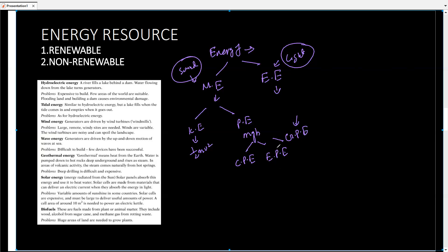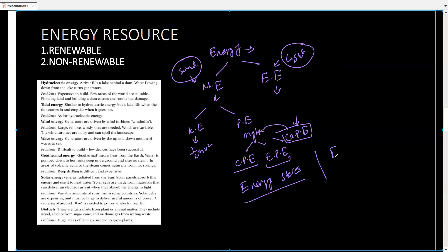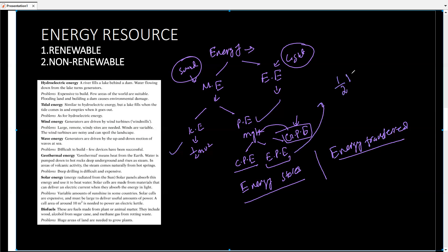Gravitational potential energy — with respect to the earth's surface — has the formula mgh. Chemical potential energy is energy stored due to the position of atoms. Elastic potential energy is energy stored due to a compressed or stretched spring. After that, we covered energy stores and energy transfers. Energy stores include electrical energy, thermal energy, elastic potential energy, kinetic energy, and chemical potential energy. The formulas covered were ½mv² for kinetic energy, mgh for gravitational PE, and ½kx² for elastic potential energy, where k is the spring constant and x is the extension from Hooke's Law.